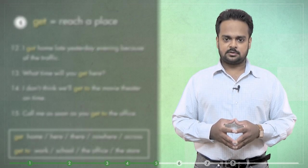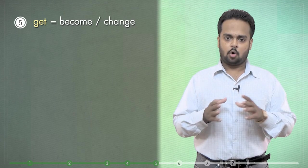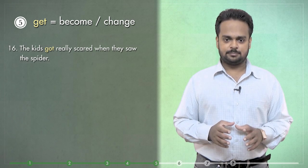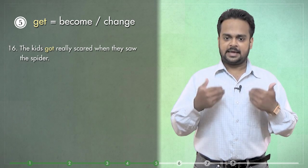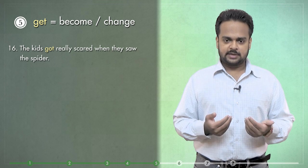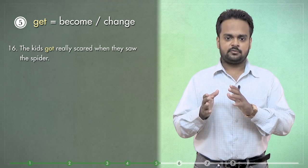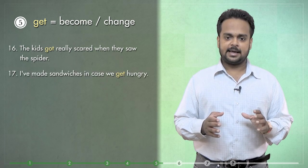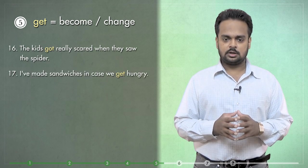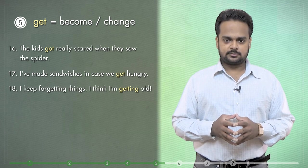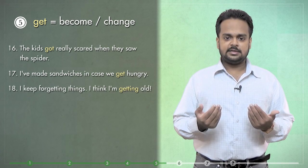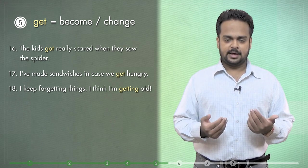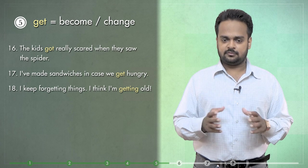Alright, the fifth use of get is to mean to become or to change. For example, the kids got really scared when they saw the spider. That means they became scared. In this type of sentence, you have get followed by an adjective. In the next example, I've made sandwiches in case we get hungry. Similarly, I keep forgetting things. I think I'm getting old. This is a common expression and it's said humorously – that is, in a funny way.